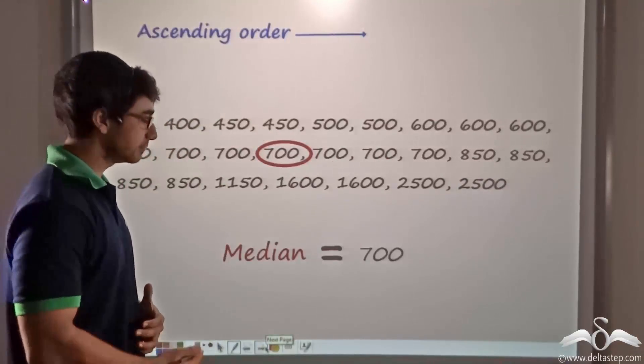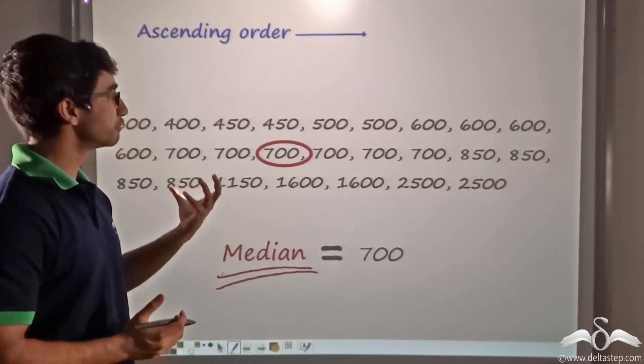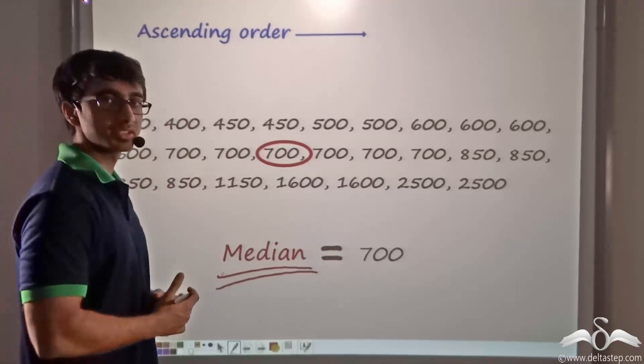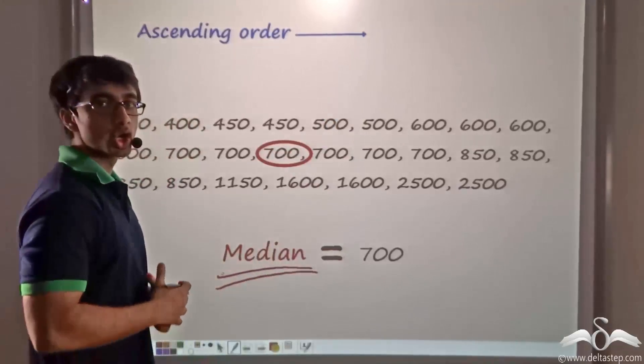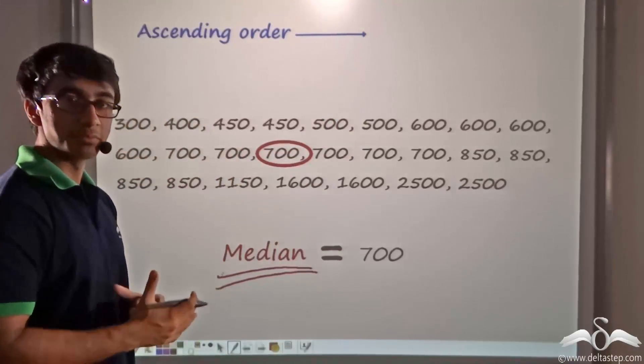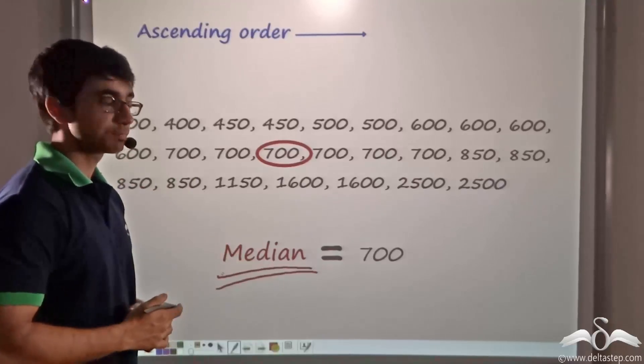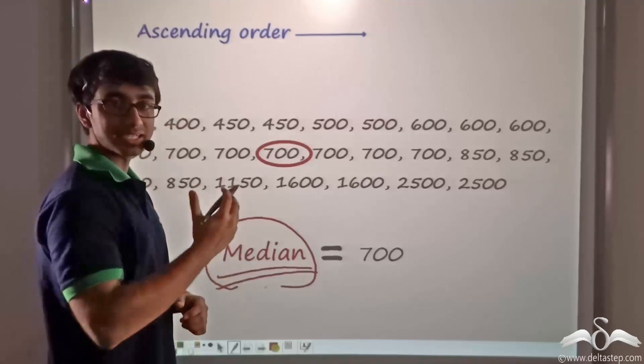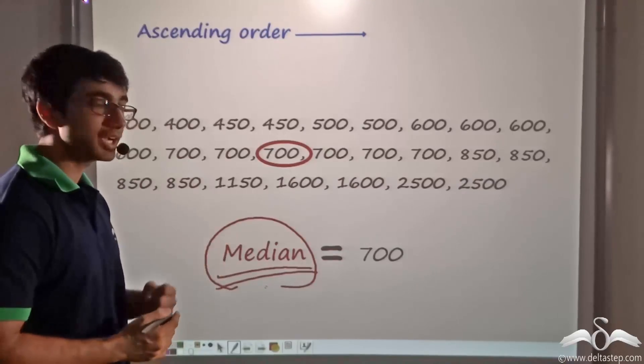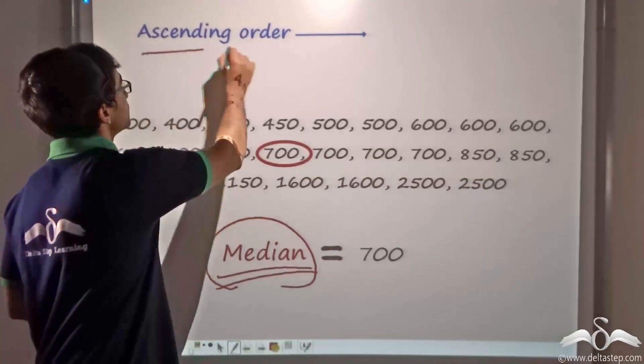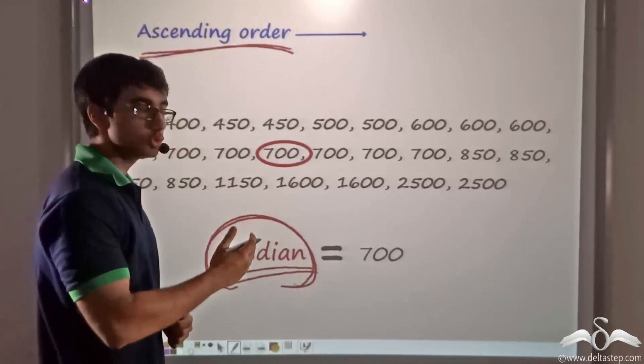This middle value has a name which is known as median. What is the usefulness of median? With the help of median, the shopkeeper will be able to say that half his customers have paid less than 700 and half his customers have paid more than 700. Or in other words, with this value, he is able to equally divide this set of data into two parts, two equal parts. And this is what median does. It divides the data set into two equal parts. The only thing that is important to remember in case of finding out the median is that firstly, the data should be arranged in ascending order. And secondly, this median should always be the middle value of the given data set.